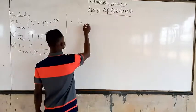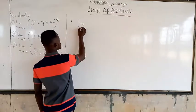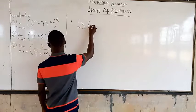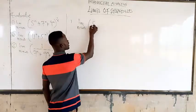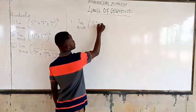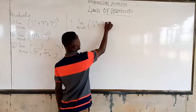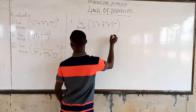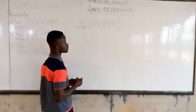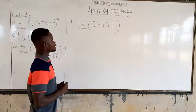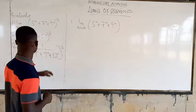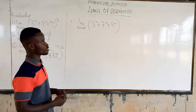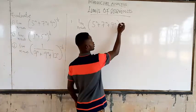We have the limit as n approaches infinity of 5 to the power n plus 7n plus 9 to the power n, all to the power 1 over n. I would like us to solve the second one by you. Let's solve the first one.